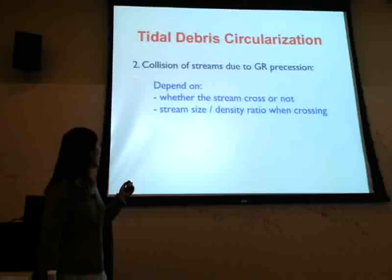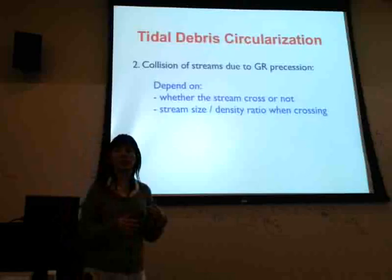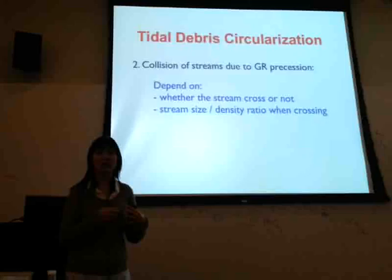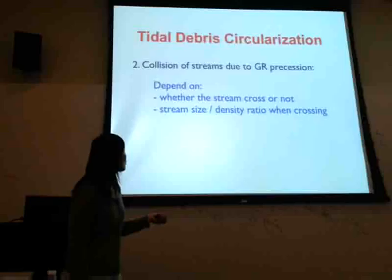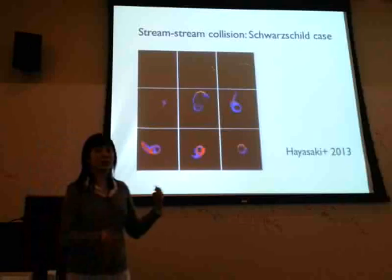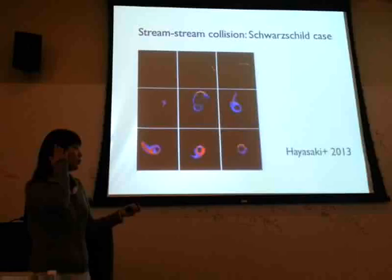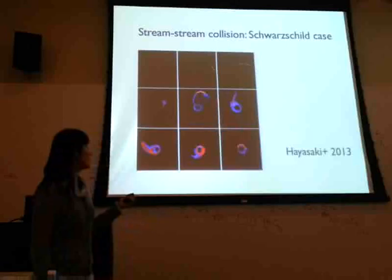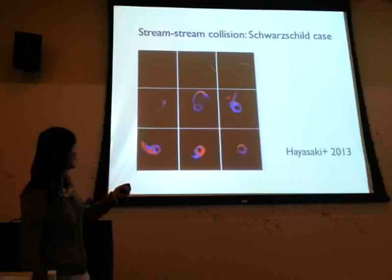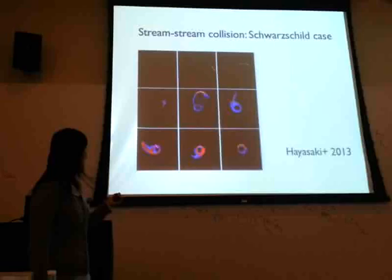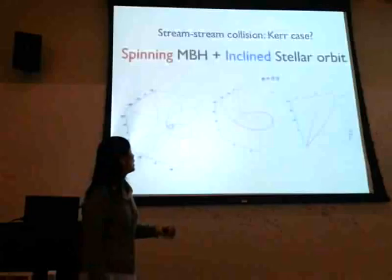For the second mechanism — stream-stream collision producing shocks to circularize tidal debris — this depends on whether the stream can self-cross due to GR precession, and on the ratio of stream sizes if they do collide. This applies to a non-spinning supermassive black hole where all motion is planar. As shown by Haseki et al. this year in an SPH simulation using a pseudo-Newtonian potential, for eccentric tidal disruption events, as the stream gets long enough and starts to cross itself, there are strong shocks, and everything circularizes in one or two orbits.